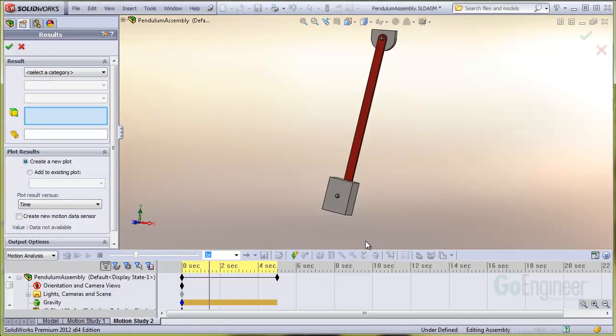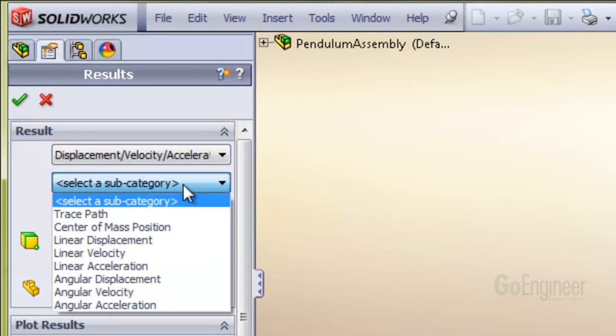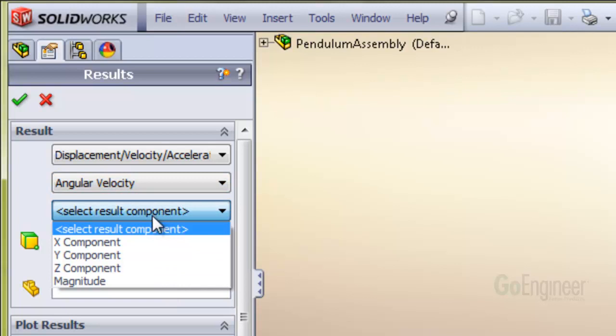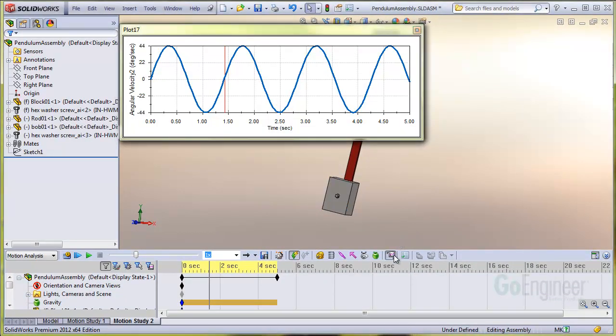We'll graph the angular velocity. And I'll pull out the Z component. And we're seeing about 44 degrees per second.